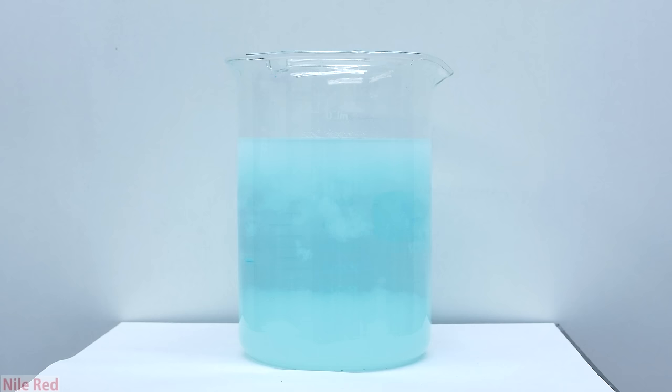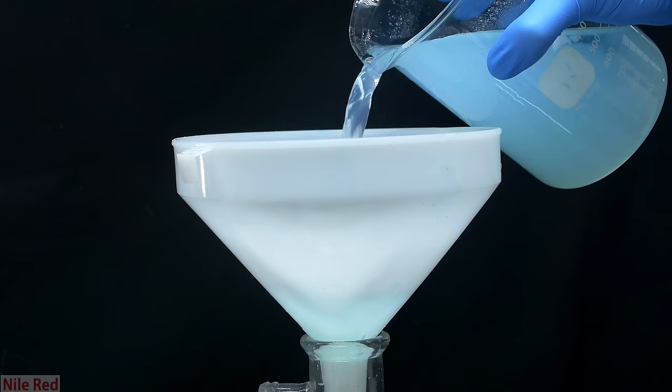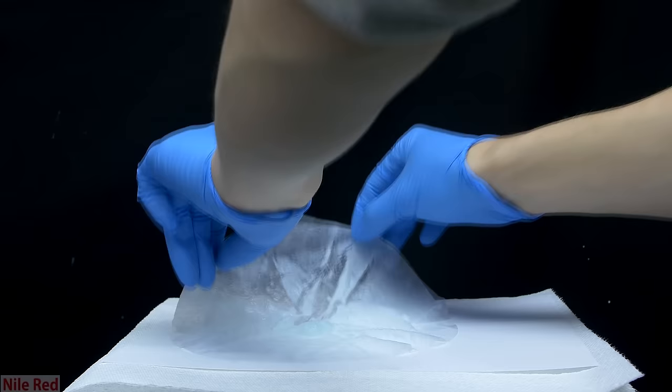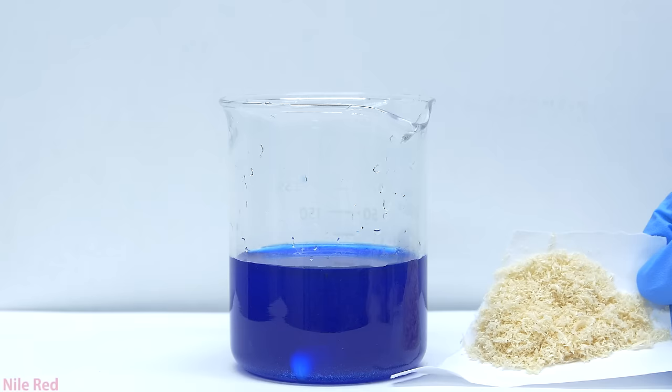After letting it sit in the acid for a while and stirring it occasionally, I'm left with a lot of white fluff. I filter the cellulose off just using a coffee filter and a funnel. After everything's been filtered, I lay out the cellulose to dry. As one final test, I try to see if it's able to dissolve some fresh sawdust.